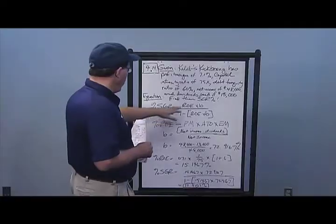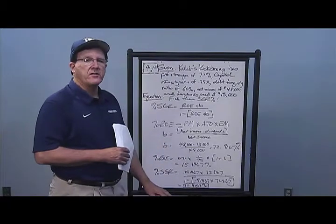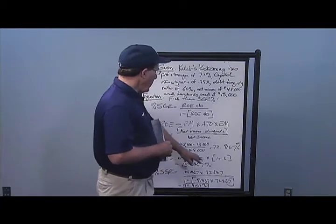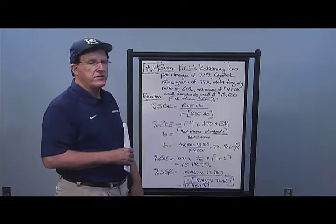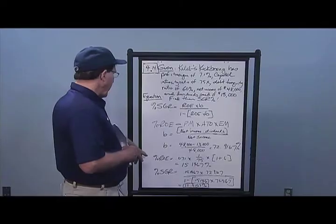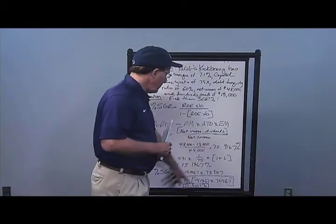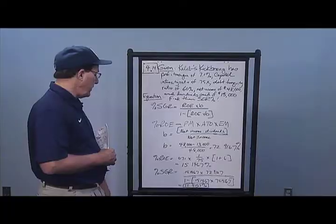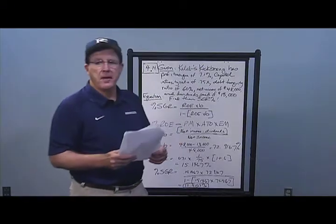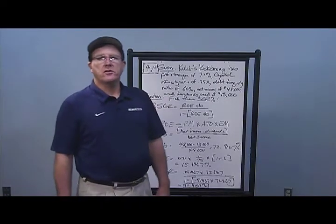To calculate ROE, I use the DuPont formula: profit margin times asset turnover times equity multiplier. Asset turnover is one over the capital intensity ratio, so one over 0.75. The equity multiplier is one plus debt-to-equity, or 1.6. Multiplying these three: 7.1% times (1/0.75) times 1.6 gives ROE of 15.1467%. Plugging into the SGR formula: ROE times b divided by one minus ROE times b gives a sustainable growth rate of 12.4157%. That's the maximum growth rate in sales without increasing equity while maintaining the debt-to-equity ratio. That is the answer to problem number 14.